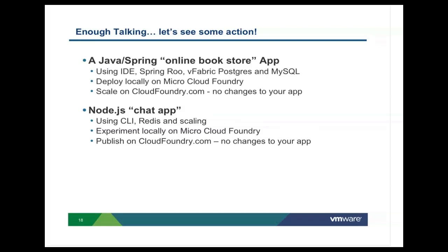What I'm going to show you is actually two demos. The first one: I'm going to take a Spring application, which is an online bookstore — a place where you look for and buy books — and deploy it first to my local Micro Cloud Foundry here on my Mac, using MySQL as my database. Then I'm going to move it to cloudfoundry.com using another database, with no code changes, and I'm going to scale it on the cloudfoundry.com instance. I'll also show you how to use a recently announced feature called tunneling, which lets you look at the actual data stored in the MySQL database.